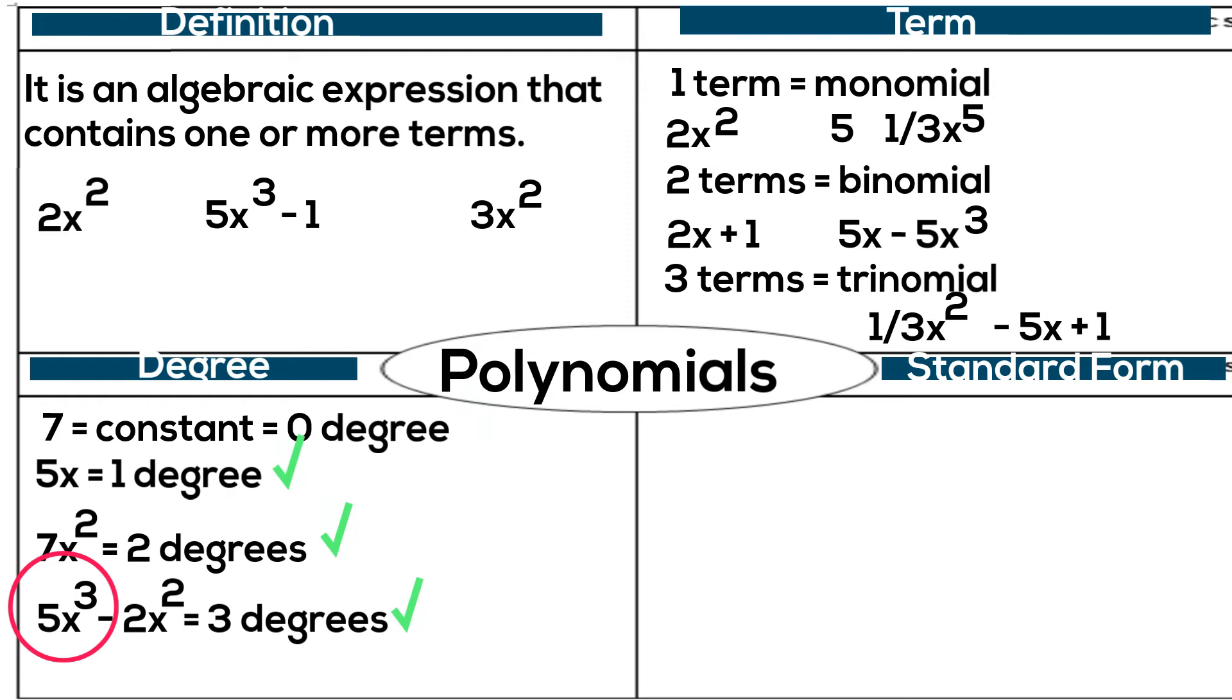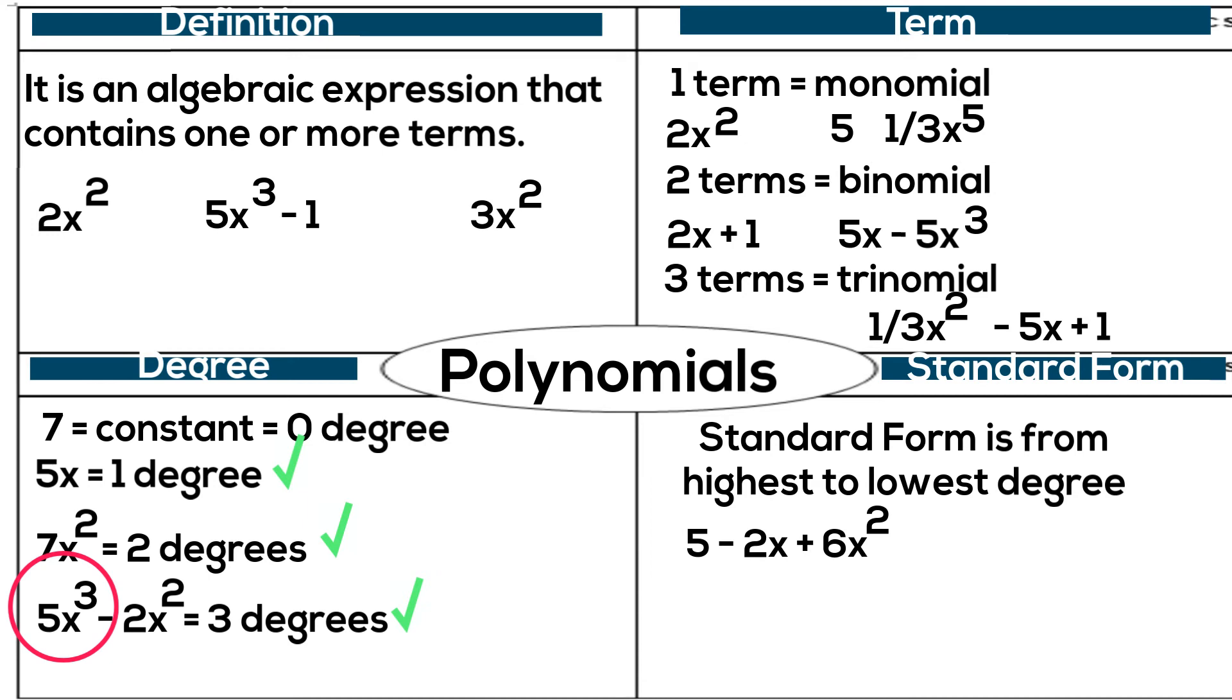Now let's look at forms. What is standard form? Standard form is when you take a polynomial and put it in an order from the highest degree to the lowest degree. Now start with a polynomial not in standard form, 5 minus 2x plus 6x squared. This is a trinomial because it has three terms.